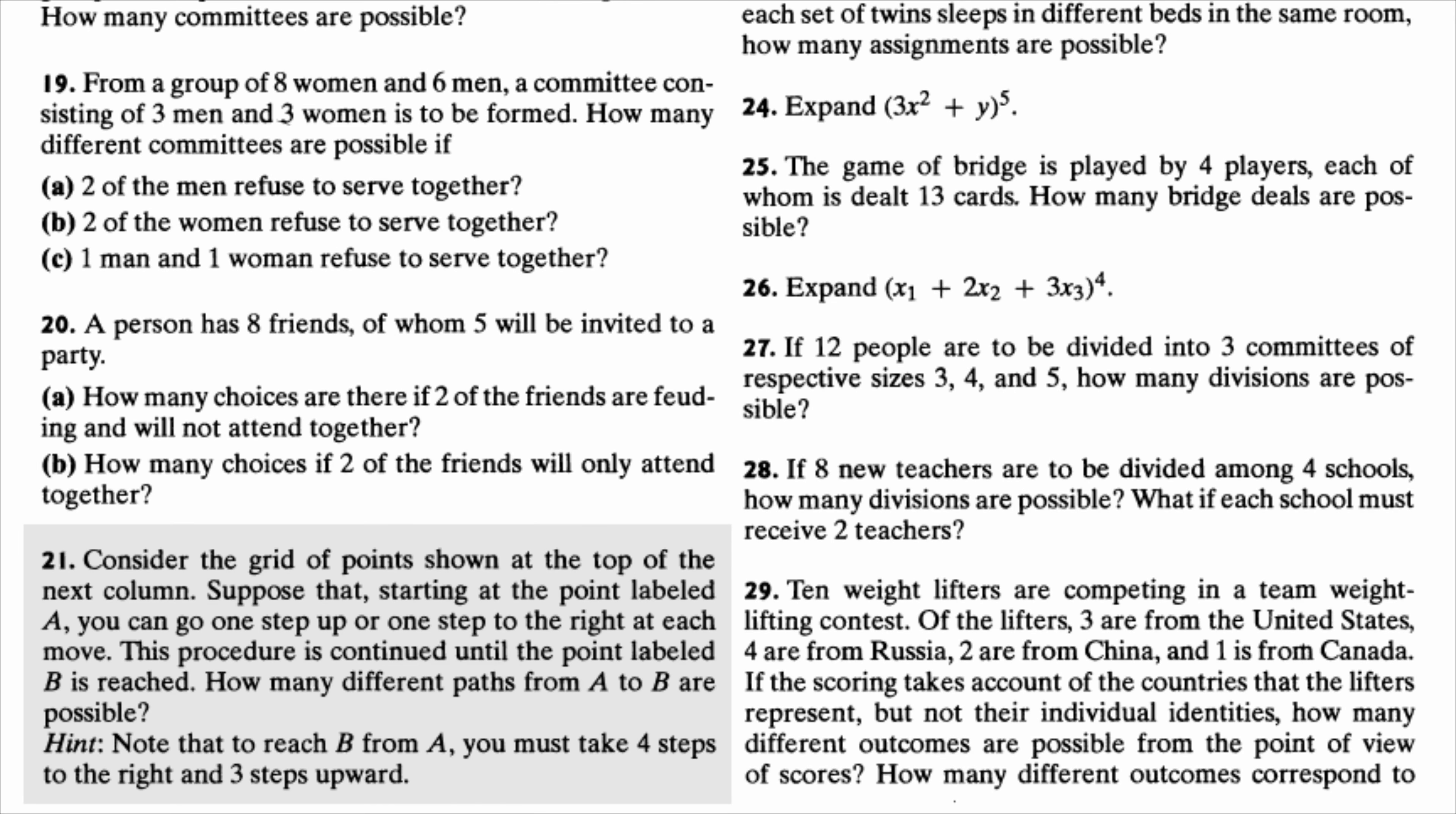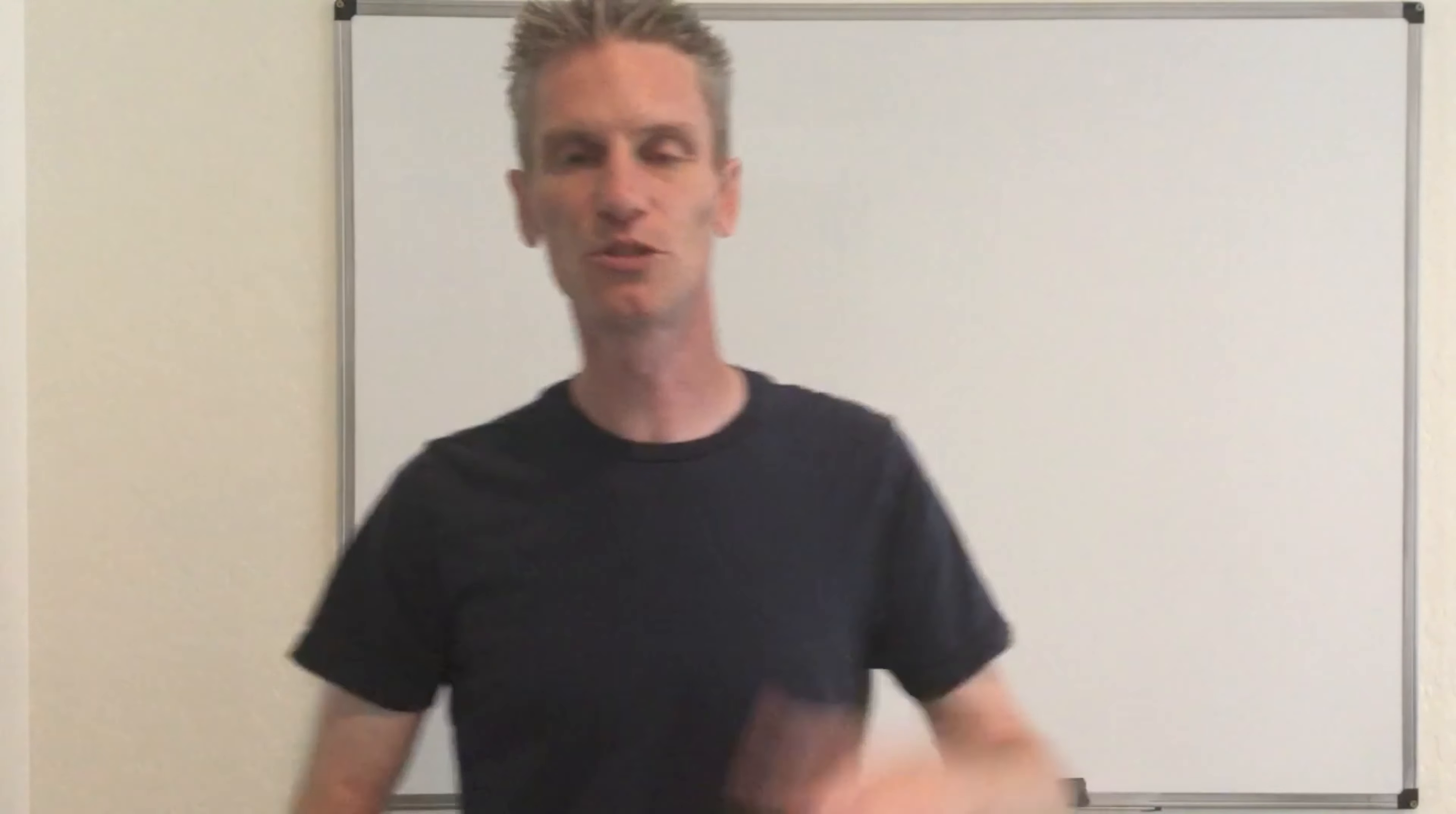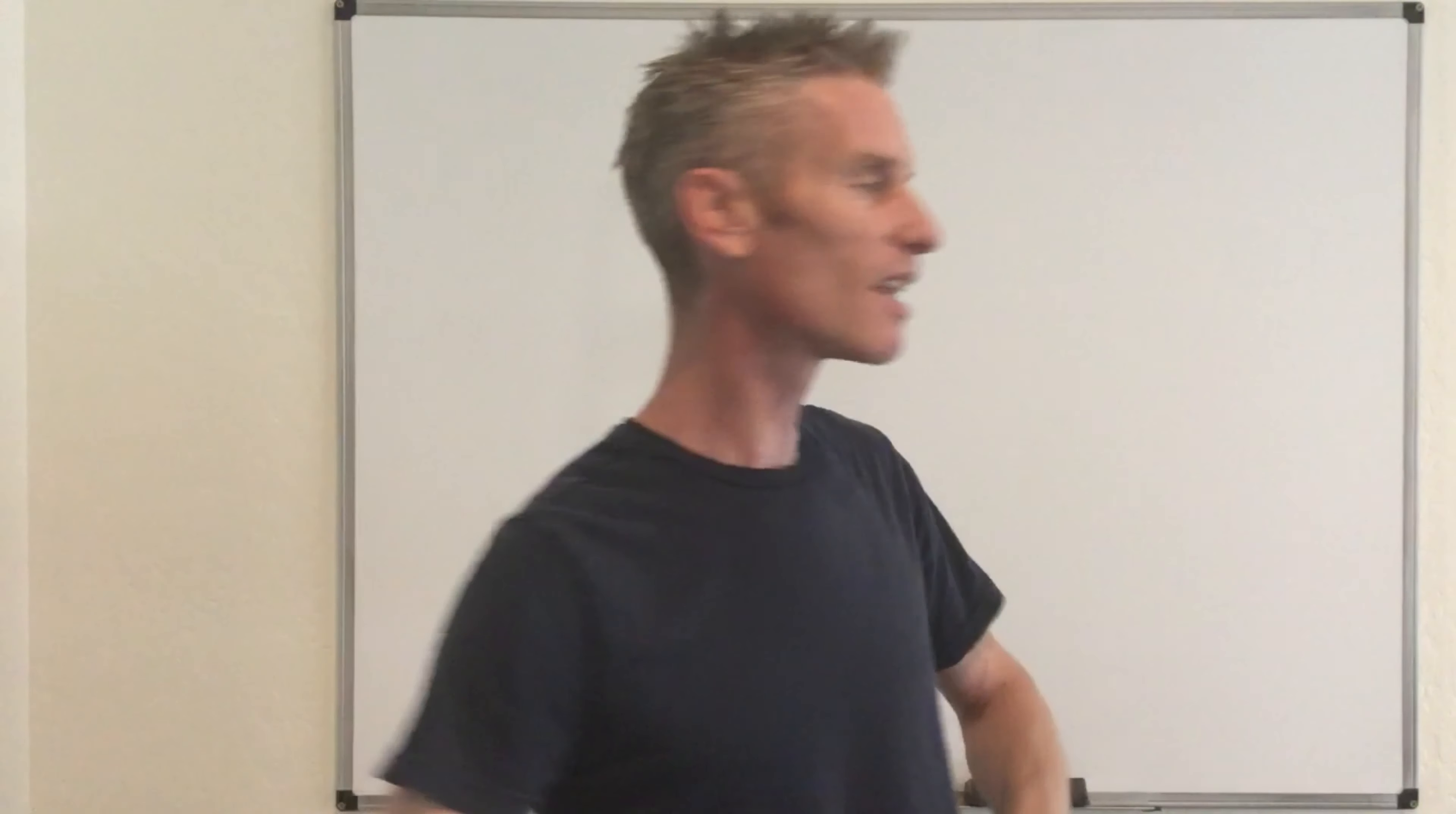So in this problem, the goal is to find the total number of paths going from point A to point B on a two-dimensional grid if you can only move either right or up. So in the slide here, you don't have the picture, but I'm going to show you on the board what it looks like.